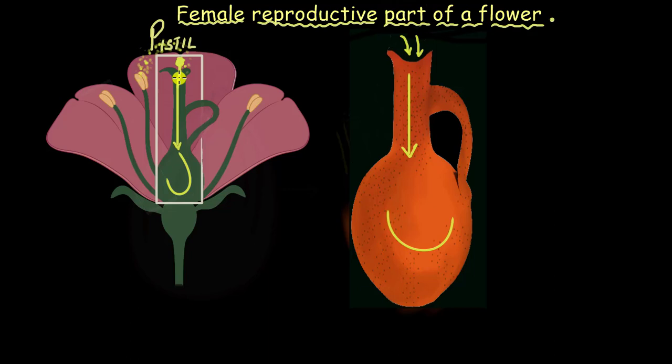You need not worry about where this pollen tube has come from or how it developed from the pollen, because we will have a complete different video on it. But for now, just remember that the pollen enters from the top through its pollen tube and goes all the way down to this broad area. And if you are wondering why is she calling this long slender area stylish? Well, this area has got a special name. It is called style, and that is the reason I was calling it stylish.